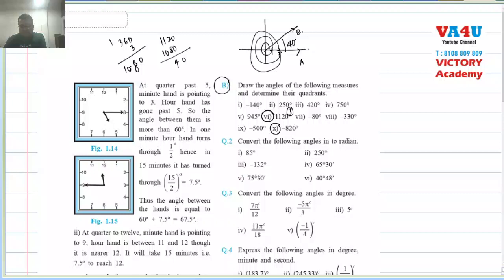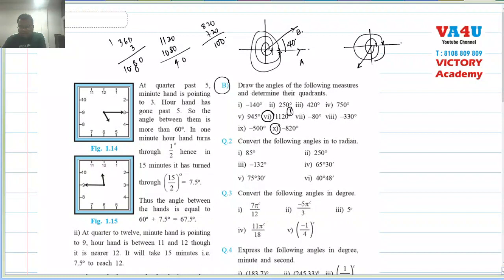For minus 820: the notation means the angle is measured clockwise. Out of 820, we have 720 as a multiple of 360, and 820 minus 720 = 100. So we do two clockwise rotations and then move 100 degrees clockwise. The final arm OB lies in the third quadrant. We will stop here and continue in the next lecture. Thank you.